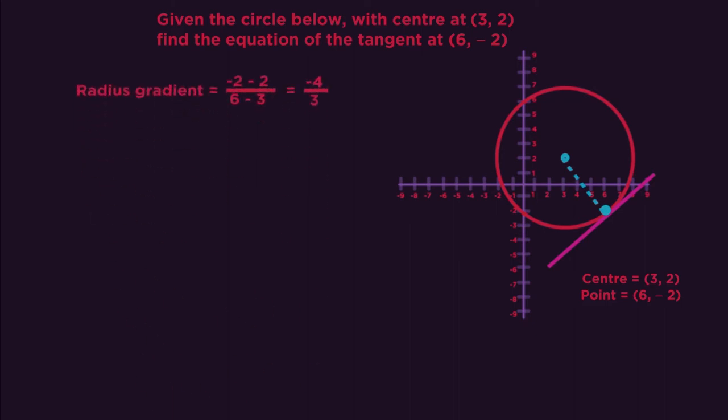If the gradient of the radius is minus 4 thirds, as the tangent is perpendicular to this, we can flip the gradient and change the sign. The equation of the tangent must be y equals 3 quarters x plus c.